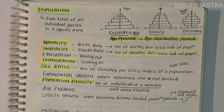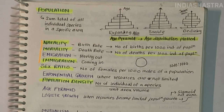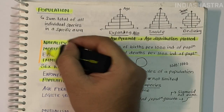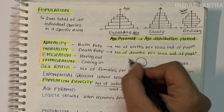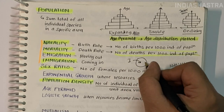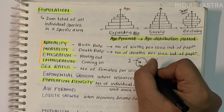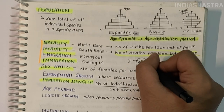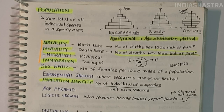Emigration is the number of individuals who have left the habitat and gone elsewhere during the time period under consideration. Population density increases if births plus immigrants (natality and immigration) exceed deaths plus emigrants (mortality and emigration). In normal circumstances, birth and death rates are the most influencing factors in population growth.